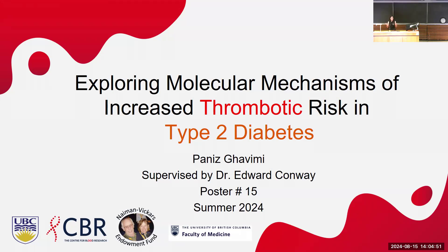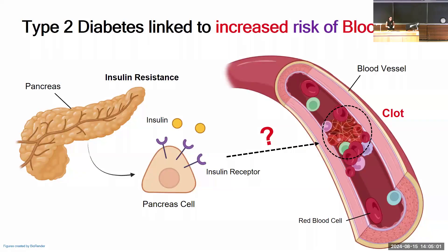My name is Punees, and this summer I worked at Dr. Conway's lab exploring links between thrombosis and type 2 diabetes. Patients with type 2 diabetes are at increased risk of developing blood clots. There are three transmembrane proteins — CD248, the insulin receptor, and tissue factor — expressed in fat cells. We believe that the interaction between these three proteins plays a role in having more blood clots in patients with diabetes.